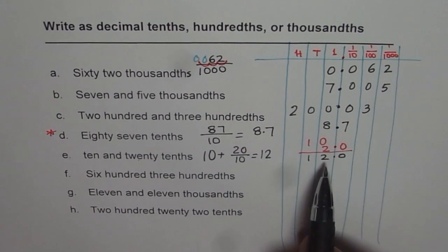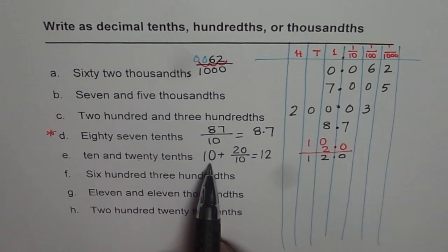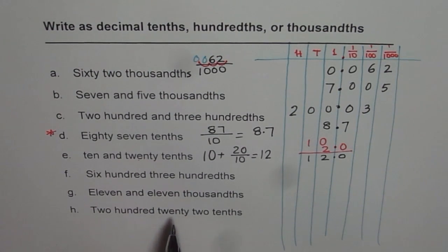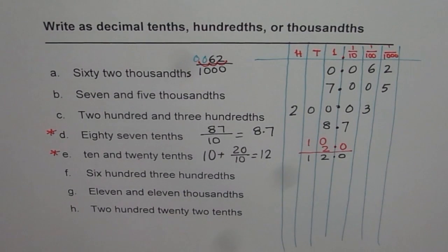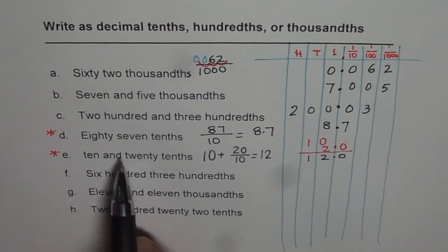So that is ten and twenty tenths, which could be seen like this. So I'll put another star here. So these are kind of difficult questions, which you may have to go again. So go through them once again.